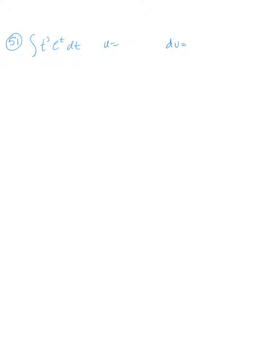dv should be the more complicated function as long as you can still integrate it. So I'm going to choose e to the t dt, and then u is going to be t cubed. That means du is 3t squared dt, and v is e to the t.